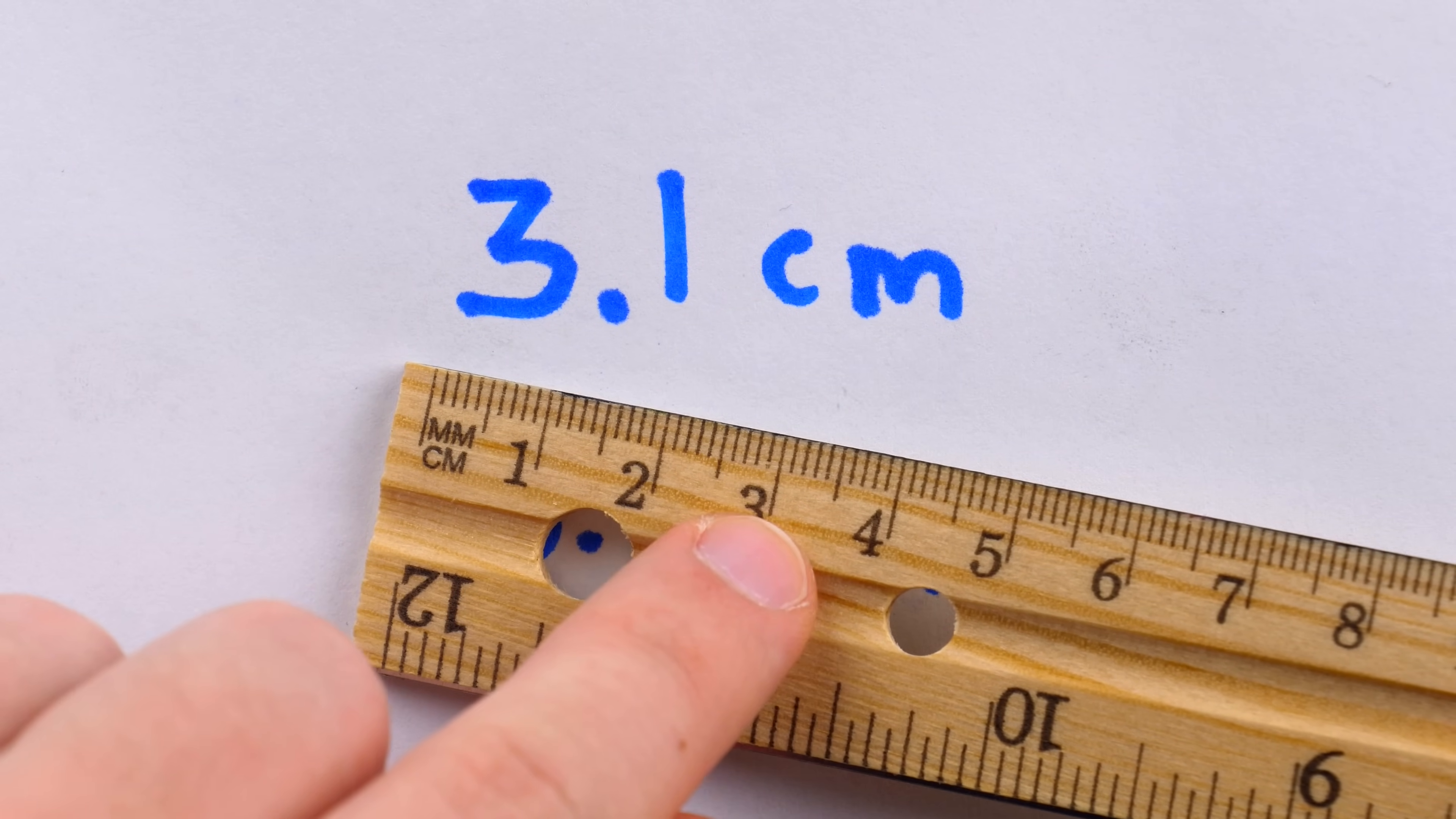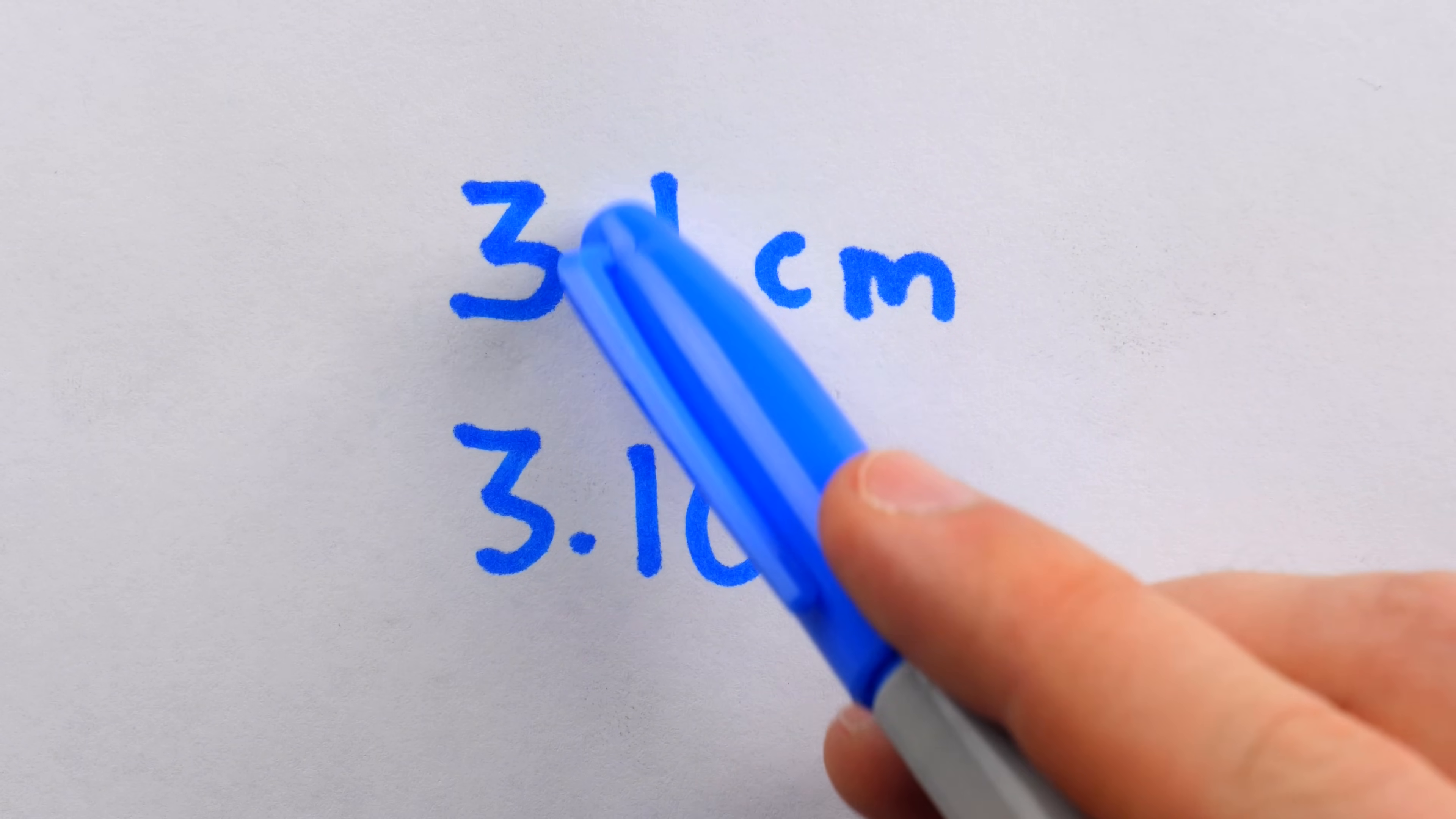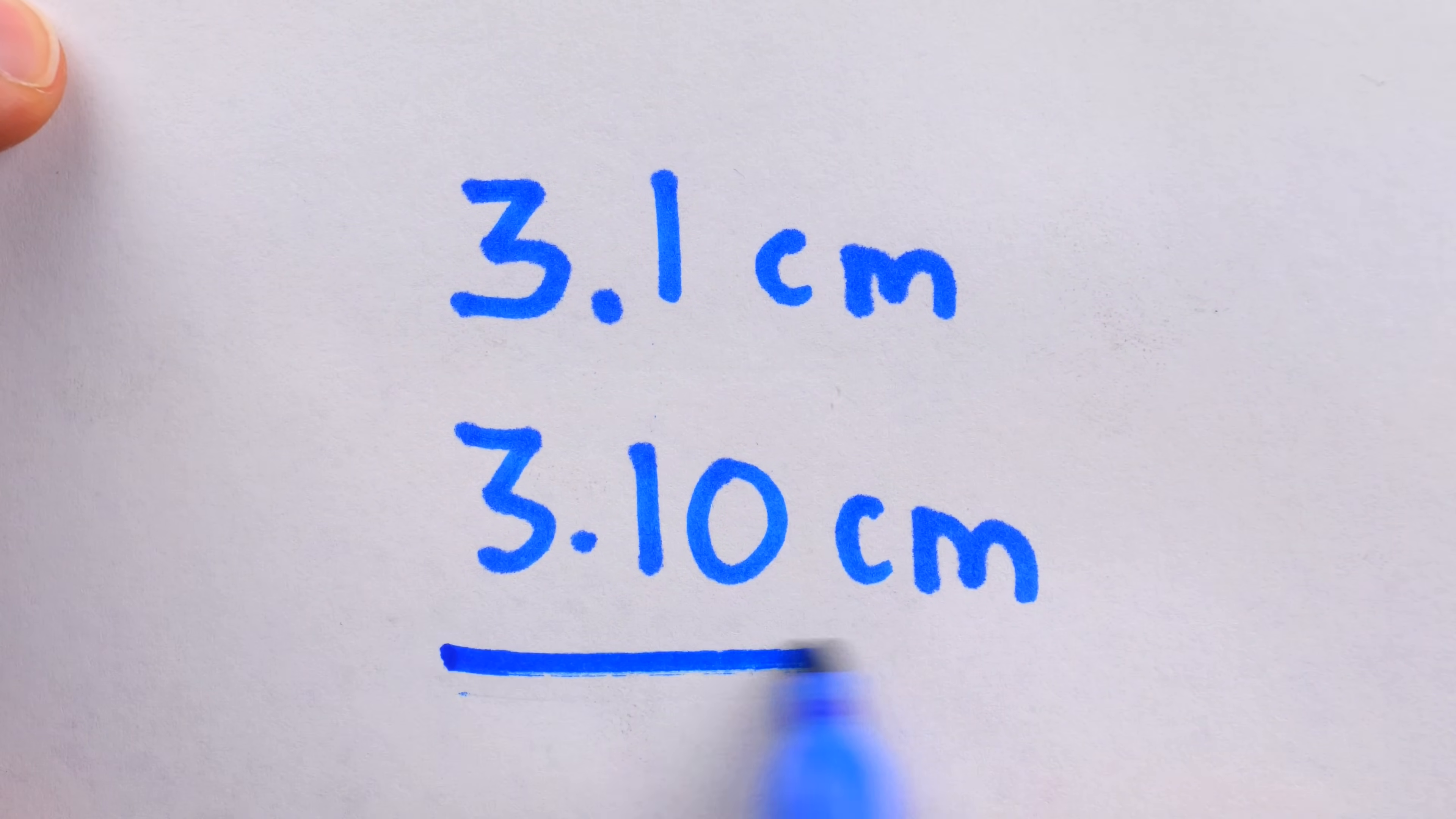If we only had centimeter markings on the ruler and not millimeter markings, then we might have measured it like this, to say, well, we're confident in 3 centimeters and there was just a little bit extra, so perhaps it was 3.1 centimeters. And yes, since this is an estimate, we might be off by a tenth of a centimeter, but that is understood. With this ruler, of course, we shouldn't be off by a tenth of a centimeter because we can measure millimeters accurately. So this is what we should write, communicating that we might be off by a tenth of a millimeter.